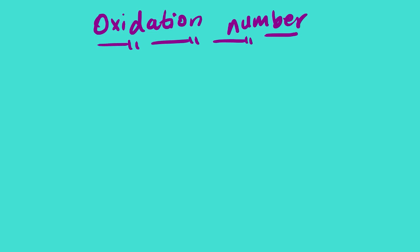Now let us go through the rules, and after the rules we are going to look at examples where we will be applying those rules and assigning oxidation numbers. We will look at many examples for practice purposes, and I'll show you how to use these practice questions. Now let us look at the rules of assigning oxidation numbers for each element or polyatomic ion.